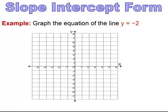Let's see an example. We're asked to graph the equation y equals negative 2. The slope of y equals negative 2 is zero, which means we have a horizontal line. I go to where y is negative 2 and draw my horizontal line.